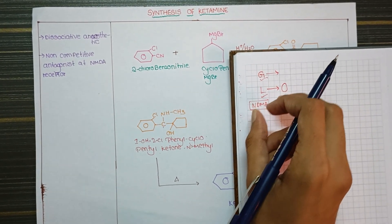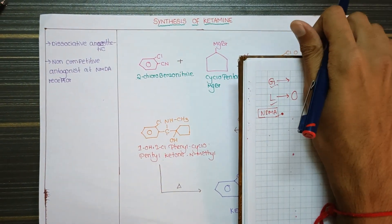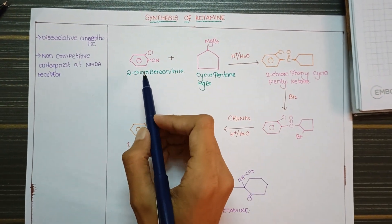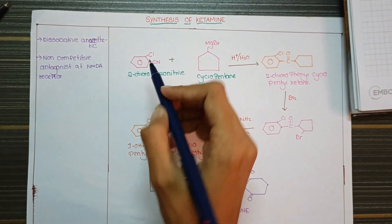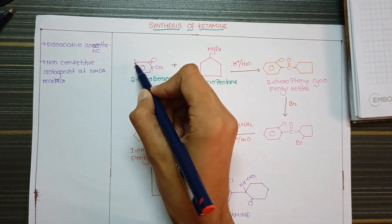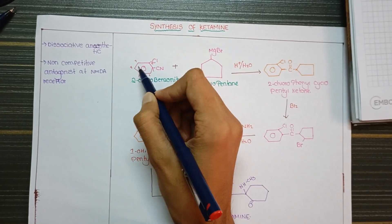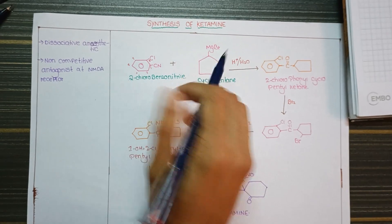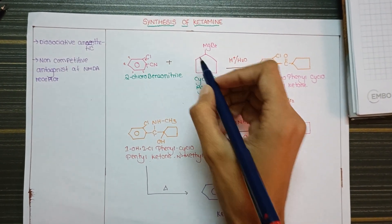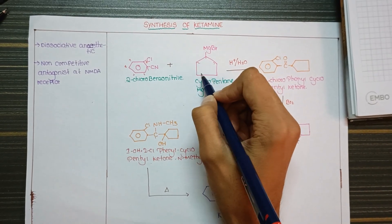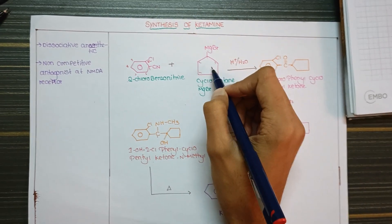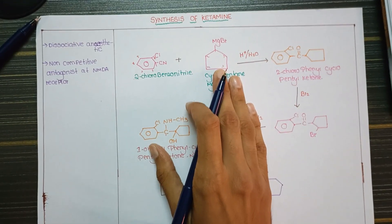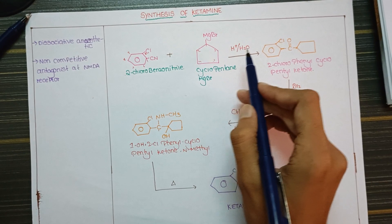The synthesis of ketamine is very simple. It starts with two compounds: 2-chlorobenzonitrile—this is the benzene structure with chloride at position 2 and a nitrile group. 2-chlorobenzonitrile reacts with cyclopentane magnesium bromide. When you run these compounds in the presence of water and H+ ion, you get an intermediate.